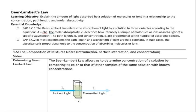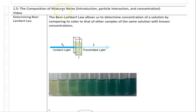Our final topic on solutions for right now is Beer-Lambert's Law. This law allows us to measure and compare concentrations of solutions. Our learning objective is to explain how it allows us to do that, and our two pieces of essential knowledge are to be able to use an equation to calculate that and to be able to explain the relationship between the absorption of light and the concentration of a solution.